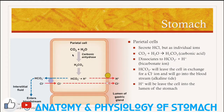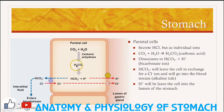Let's talk about how hydrochloric acid is made. It is the parietal cells of the gastric glands that produce hydrochloric acid, but it is not secreted in the form of acid but as individual ions. In the parietal cells, carbon dioxide and water join to form carbonic acid with the help of an enzyme called carbonic anhydrase. Carbonic acid immediately dissociates into the bicarbonate ion and the hydrogen ion.